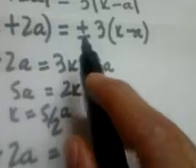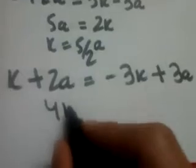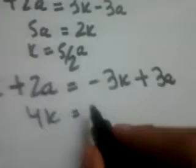Taking the negative sign, x plus 2a equals negative 3 times x minus a, which gives negative 3x plus 3a. Rearranging, we get 4x equals a, so x equals a/4. One point of intersection is a/4, which is smaller than 5a/2. So our two points of intersection are a/4 and 5a/2.